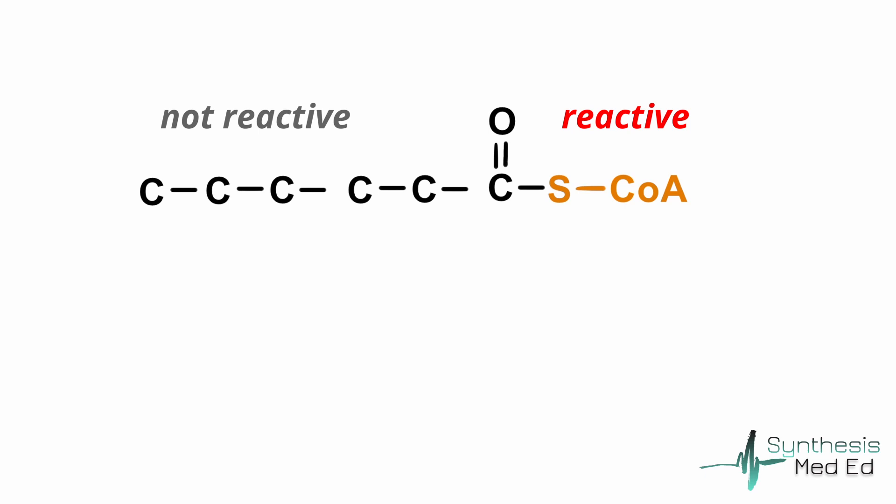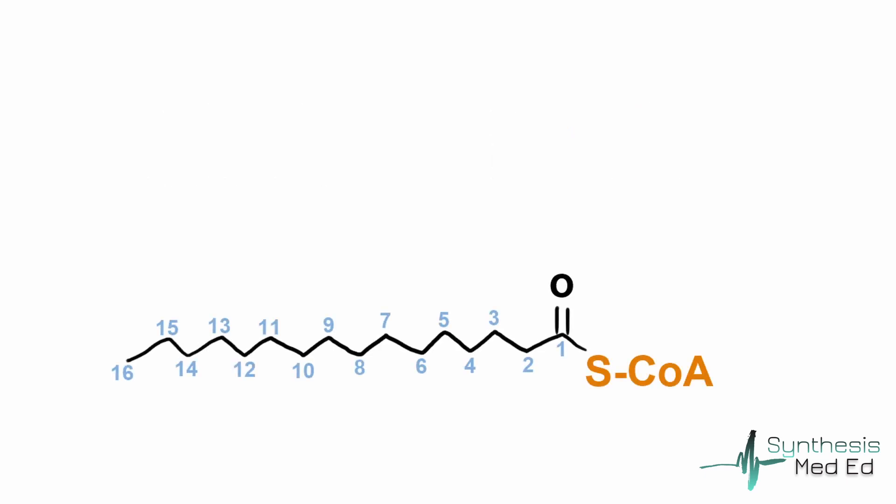Eventually, we end up with a molecule with 16 carbons in its tail. The CoA is removed and replaced with a carboxyl group, and we now have a 16-carbon carboxylic acid. And this is a fatty acid. In other words, a fatty acid is a carboxylic acid with a hydrocarbon tail.